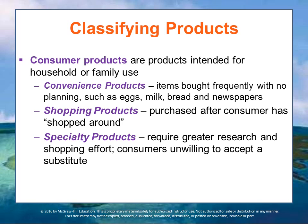Convenience products, such as eggs, milk, bread, and newspapers, are bought frequently without a lengthy search and often for immediate consumption. Shopping products, such as furniture, audio equipment, clothing, and sporting goods, are purchased after the consumer has compared competitive products and shopped around.